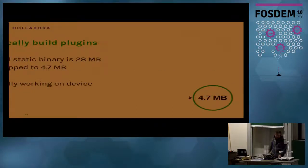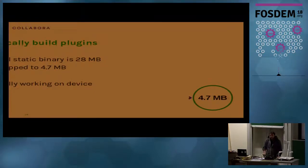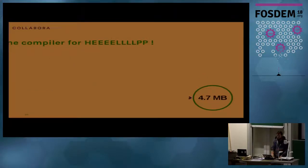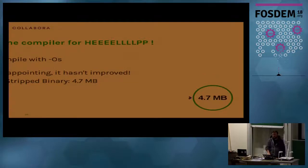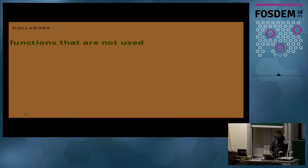With the static build, we get 28 megabytes stripped down to five. That actually works on the device, but it's still big — five megabytes, we could do less. So we ask the compiler for help and compile with -Os, which is supposed to make smaller binaries. But the improvement was marginal — it doesn't do much.